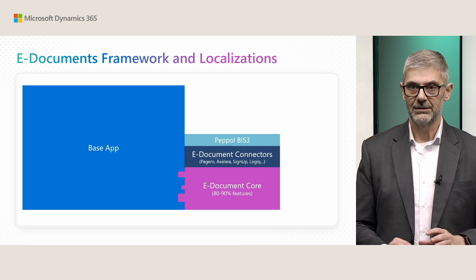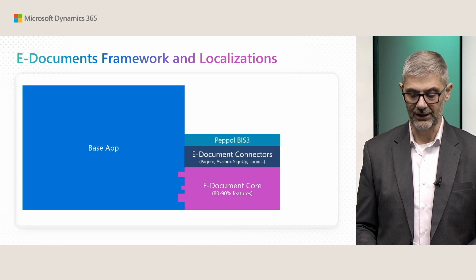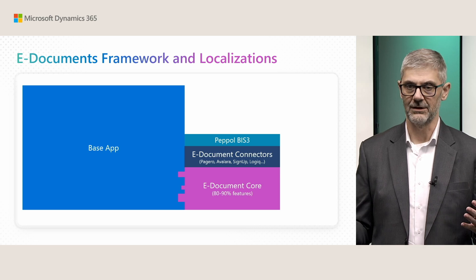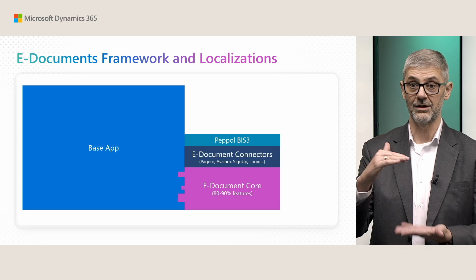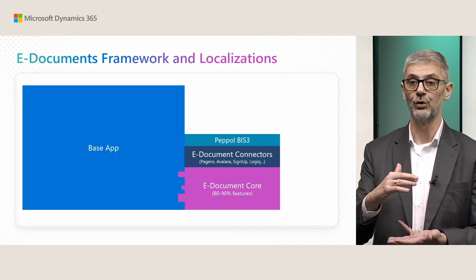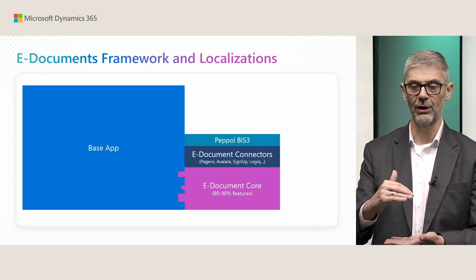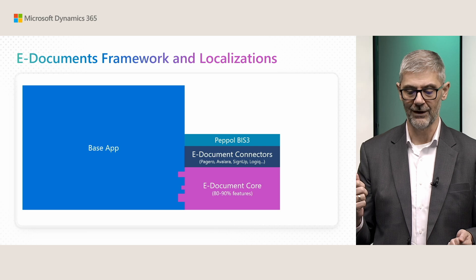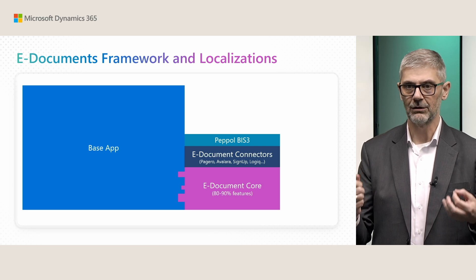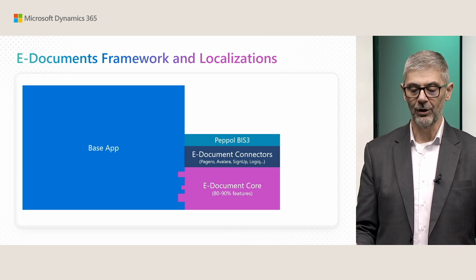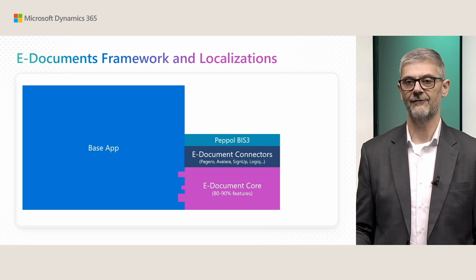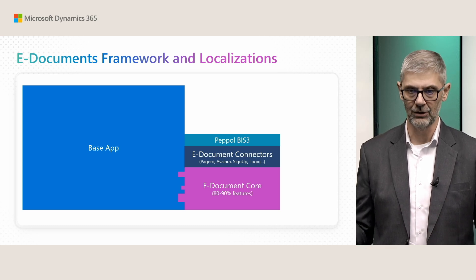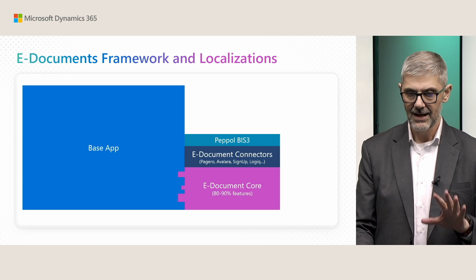On top of that, we added different connectors, because connectors can be different. You can use one of them, or maybe you do not want to use connectors at all — this is your choice. Do you want to use only Core without connectors, or do you want to choose one of these connectors? And then on top of that, we added PEPPOL BIS3 format as a global format. This format is available in all countries, in all our localizations. This is what we have by default everywhere.